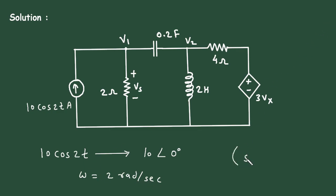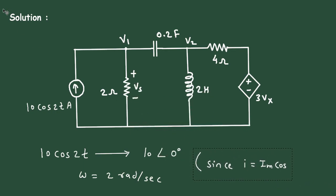Since the formula is i(t) = Im·cos(ωt + φ), if we compare this standard equation with our source, we get φ = 0, ω = 2 radians per second, and Im = 10.